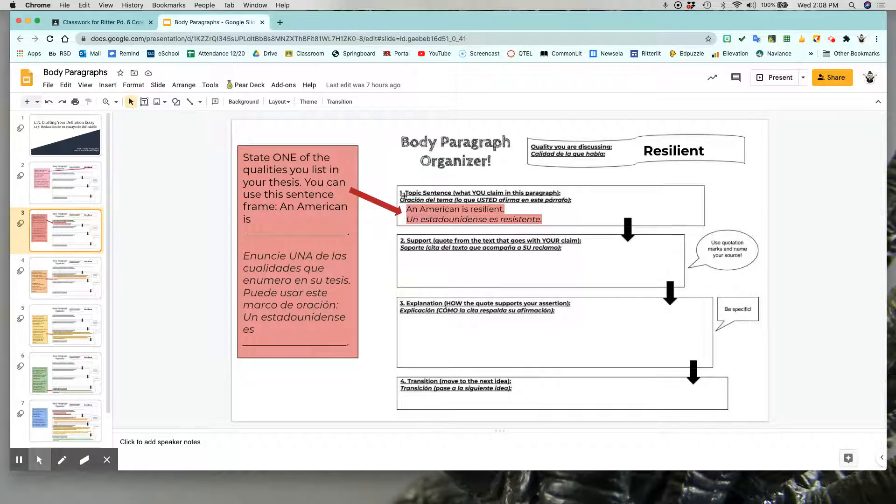Once you have that up there, you are ready to move on to the next box. In that box, you are putting your topic sentence. I'm giving you a sentence frame here that you can use: An American is blank. So what goes on that blank is the same thing that you have up here in your flag, the quality you are discussing. So for my example, it would be an American is resilient. You could fill it in with whatever you have up here. It does not have to be a single word.